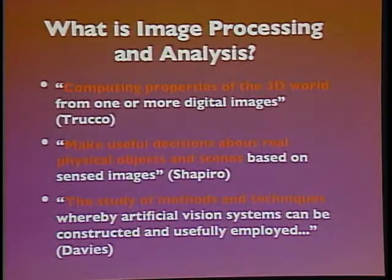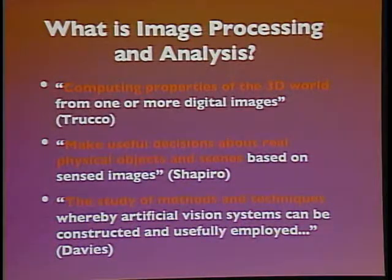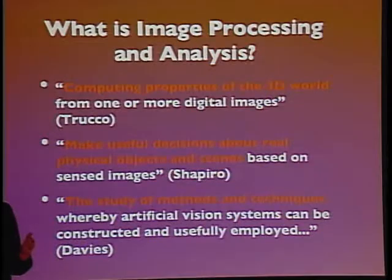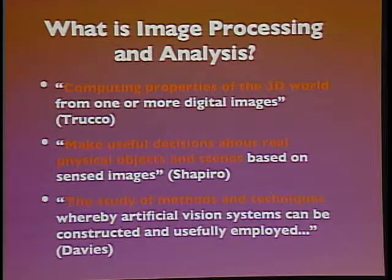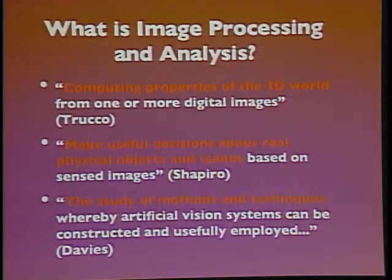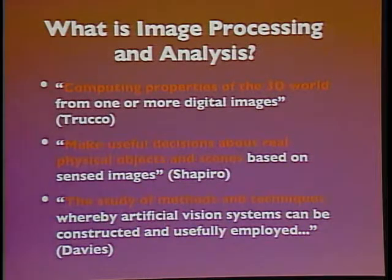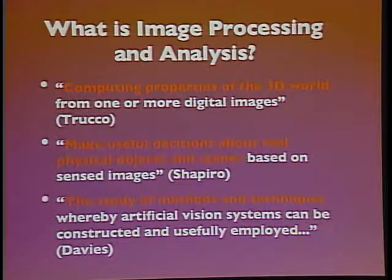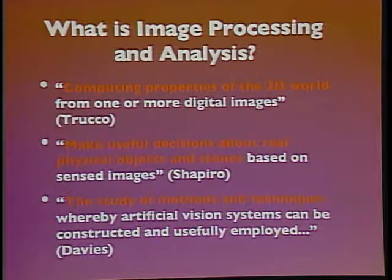One says that image processing analysis is about computing properties of the 3D world from one or more digital images. The idea is that there exists a world out there independent of whether we are sensing anything, and we come along with imperfect measurement devices — eyeballs and a brain — trying to determine the innate properties of that world. That's from Manuel Trucco's book. This is just like any other scientific measurement question — if you want to measure someone's blood pressure, no device for doing so is perfect.